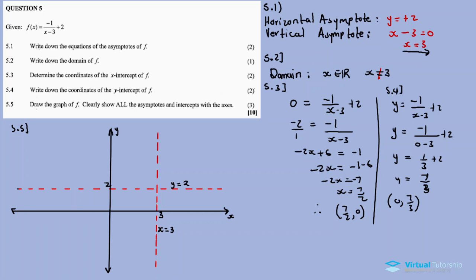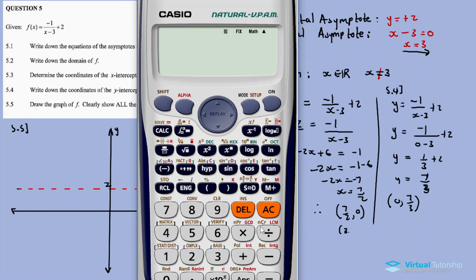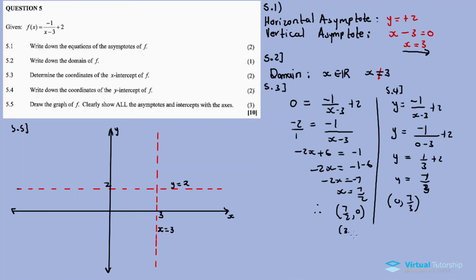By the way, 7 over 2 to plot on the graph, let's change it to a decimal. 7 over 2 equals 3.5.